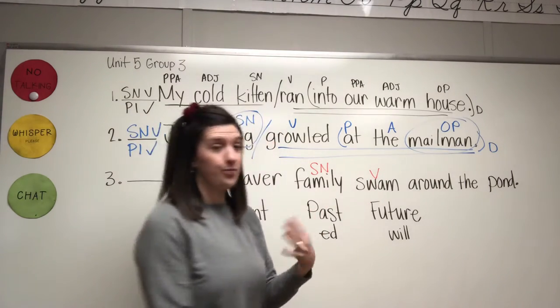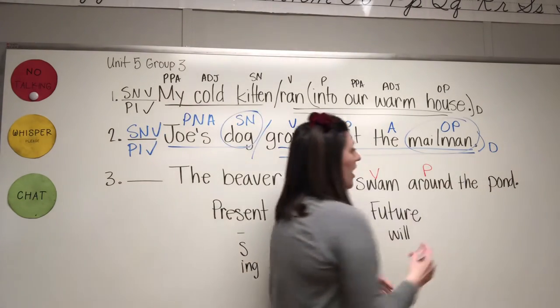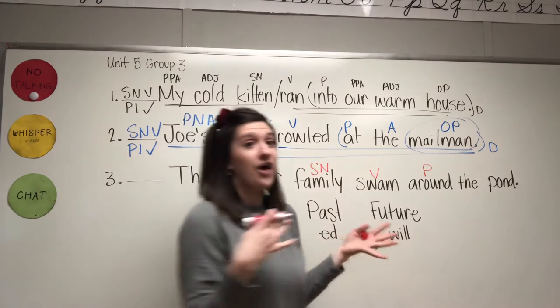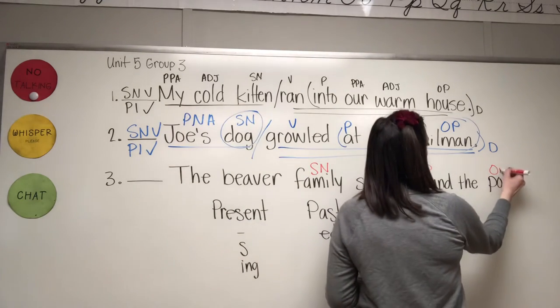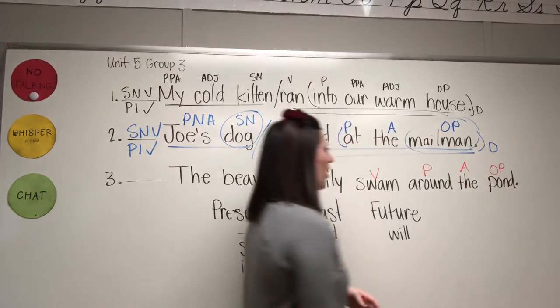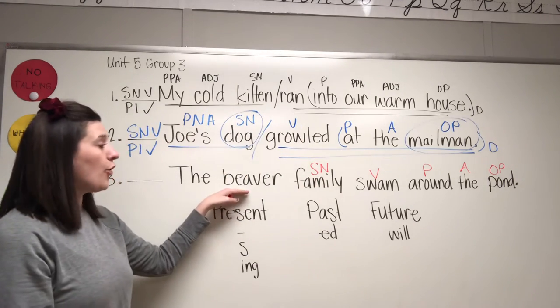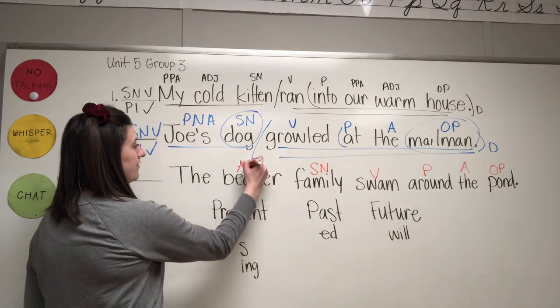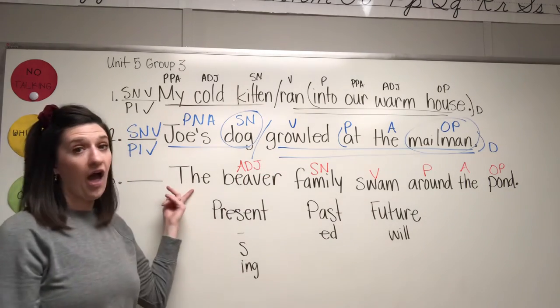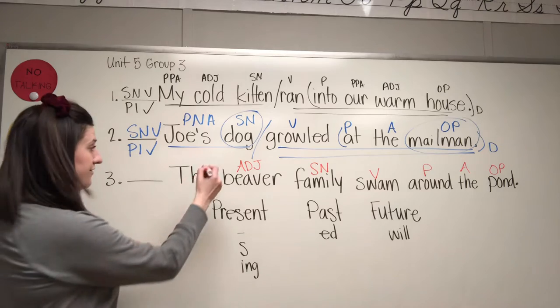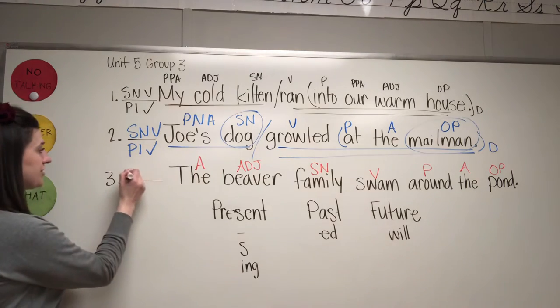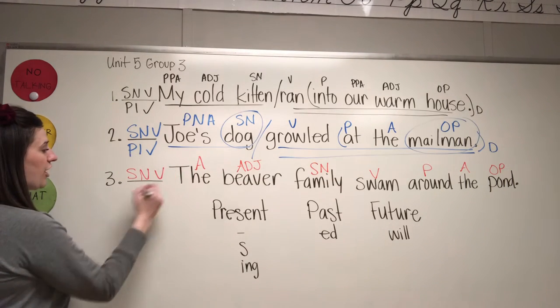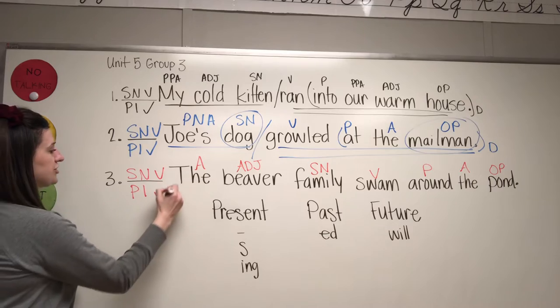Around. Preposition. Around what? Pond. Object of the preposition. The. Article adjective. What kind of family? Beaver. Adjective. The. Article adjective. Subject noun verb pattern one, check. Woohoo!